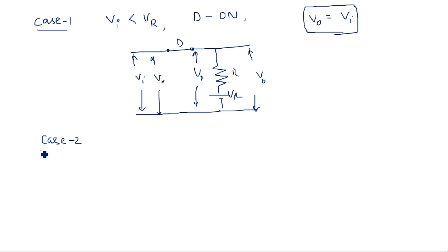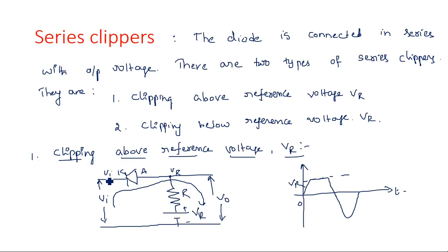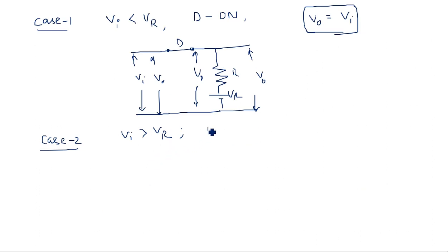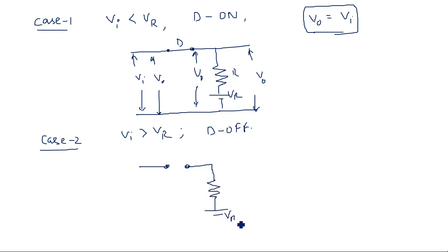Case 2: when Vi is greater than VR. When input voltage is high compared to VR, the cathode potential is high compared to the anode potential. The diode is said to be in off state, and is replaced by an open circuit ideally. The circuit then has the resistance and the same VR.